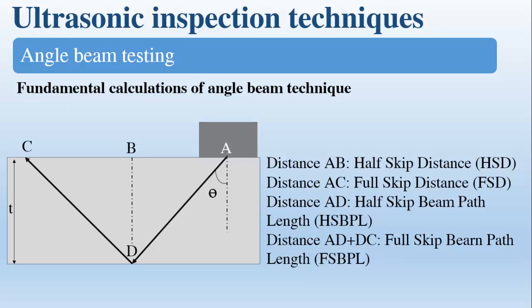The distance AD is called the half skip beam path length. The distance AD plus DC is called the full skip beam path length.